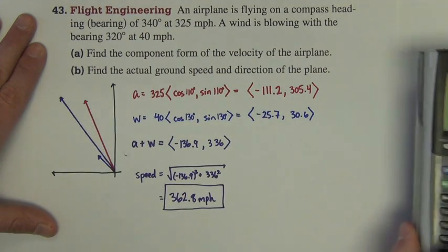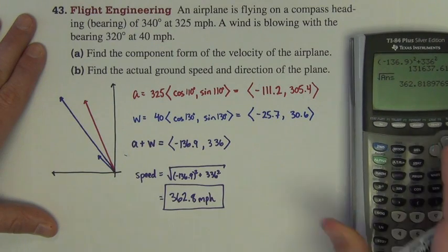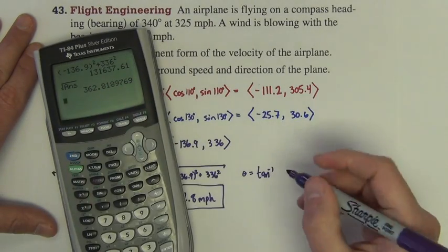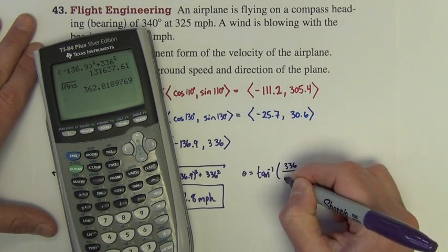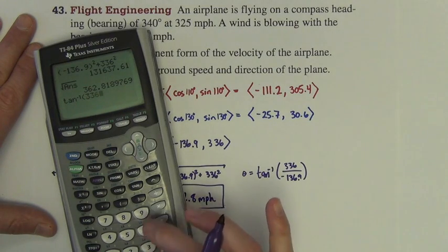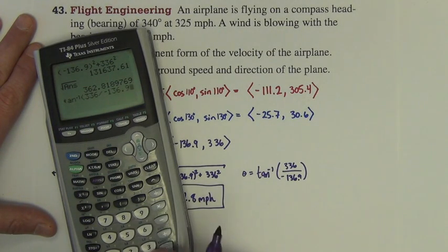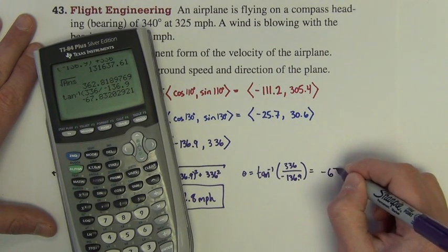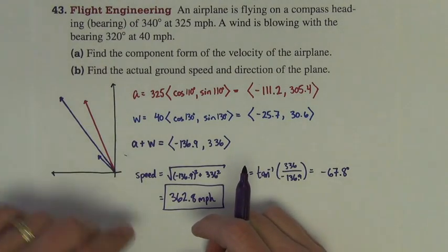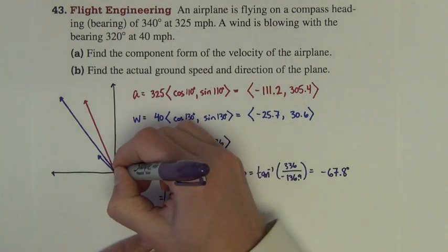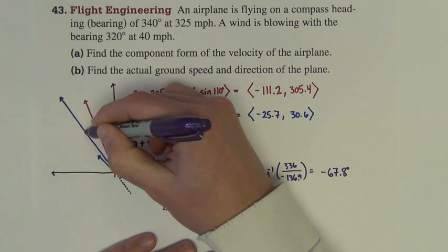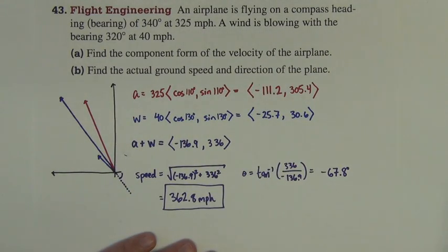And now we also want the direction, angle theta. It's tan inverse of the y value over the x. So tan inverse, this comes out to be negative 67.8 degrees. Now it kind of gets a little bit tricky. That negative 67.8 degrees is this angle right there, kind of directly in line with the A plus W vector.